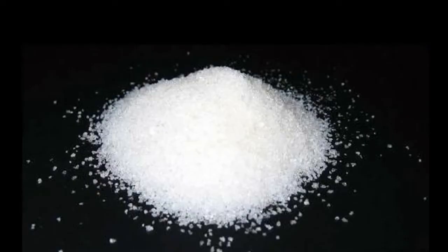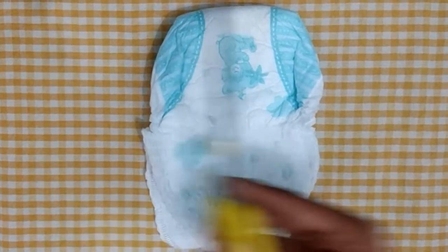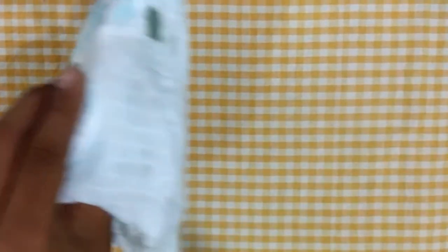Now let's see how to do the experiment. We are using super absorbent polymers taken from the diaper. Now cut the diaper and take out that material. The material used in diapers contains super absorbent polymers which are capable of holding more water.